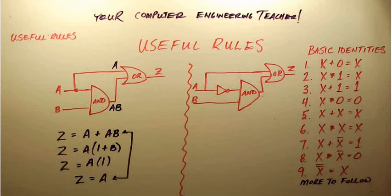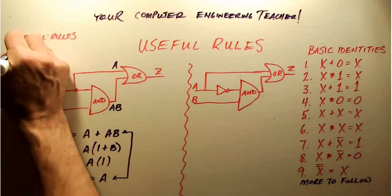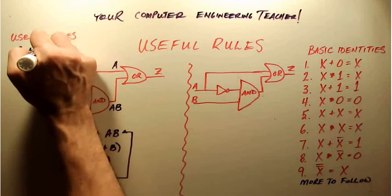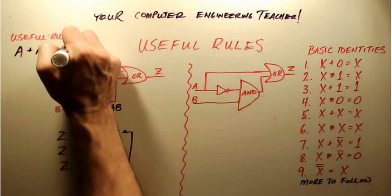So we're going to write that as a useful rule. We're going to say that anytime we see A + AB, well really that's just equal to A.